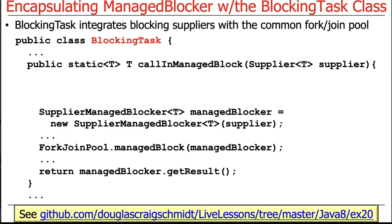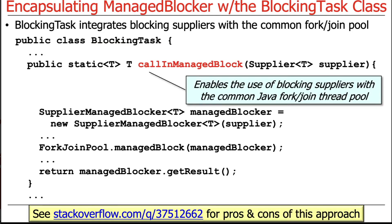We're going to define a class — a wrapper class called BlockingTask. This is going to be used to integrate blocking suppliers with the Java common ForkJoinPool. You can take a look at this example in my GitHub repository. BlockingTask has a method called CallInManagedBlock, which wraps the underlying ForkJoinPool.managedBlock factory method, and it enables the use of blocking suppliers — a Java 8 feature — with the common Java ForkJoin thread pool.